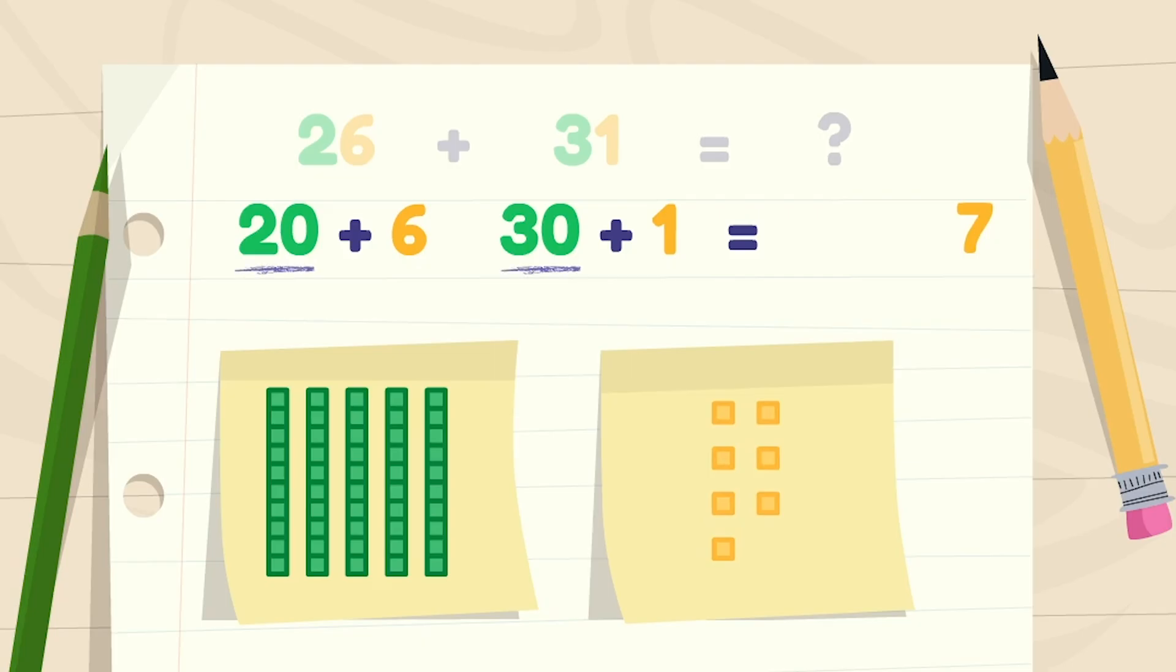Next, let's add the tens. Two tens is 20 and three tens is 30. 20 plus 30 equals 50.